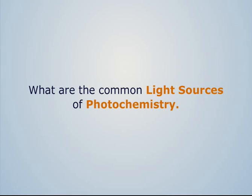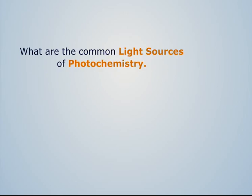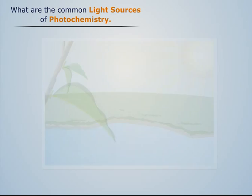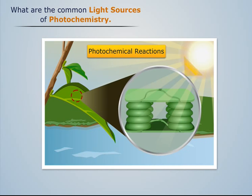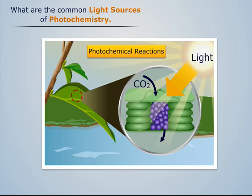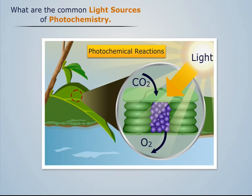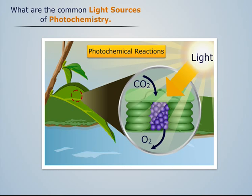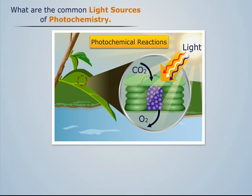What are the common light sources of photochemistry? We know that photochemical reactions need a light source which emits light of specific wavelength corresponding to electronic transitions taking place in the reactants. These electronic transitions in the reactants are produced due to absorption of infrared, visible, or ultraviolet light.